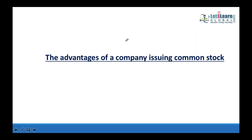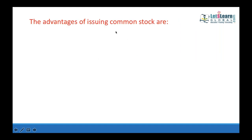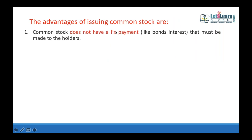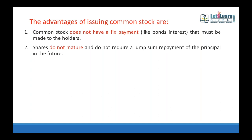Advantages of issuing common stock to a corporate: there is no fixed obligation to pay common shareholders — unlike bonds and preference shares. If there is sufficient income, only then is payment made. Additionally, bonds and preference shares mature and require large lump-sum repayments, but if a common shareholder wants to exit, he sells in the share market — not back to the company — so the company need not arrange funds.